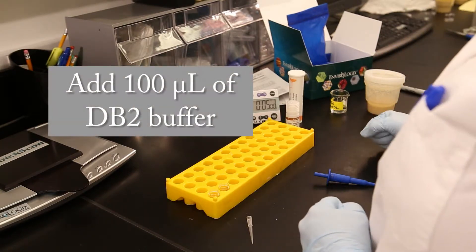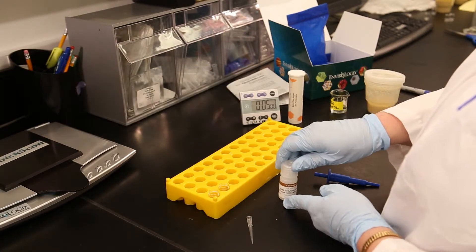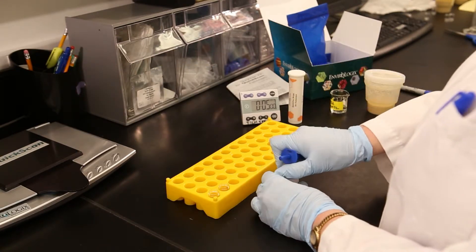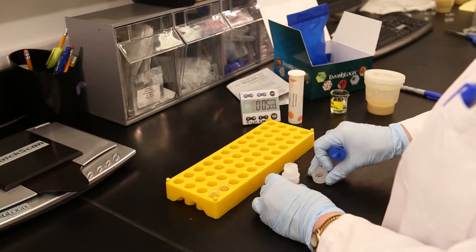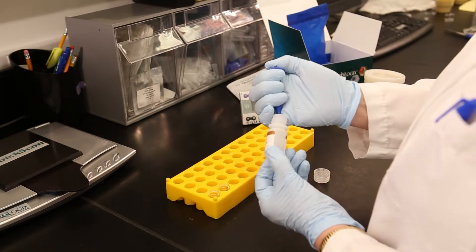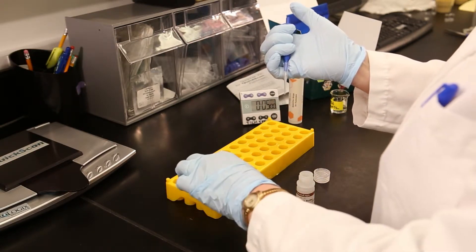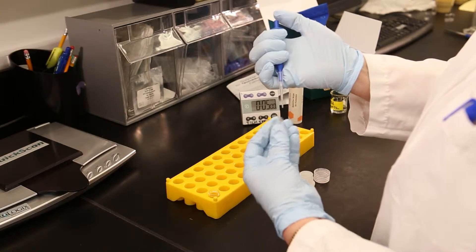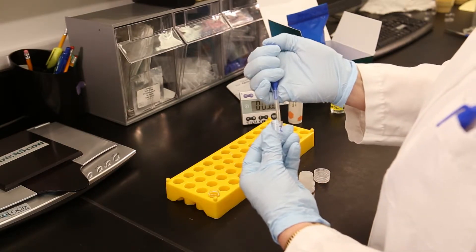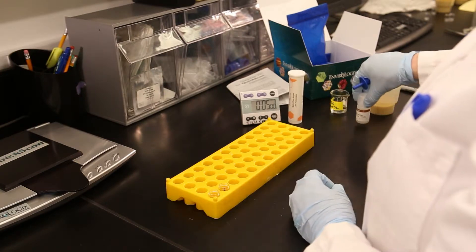Add 100 microliters of DB2 buffer to the second vial with a fresh pipette tip. This is the reaction vial. Be careful not to contaminate the DB2 buffer. Cap the buffer bottle tightly when not in use.